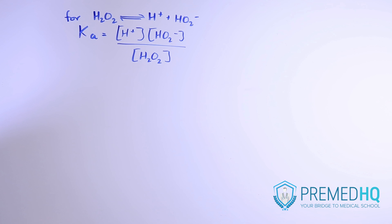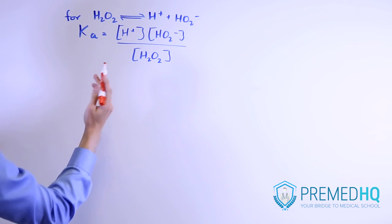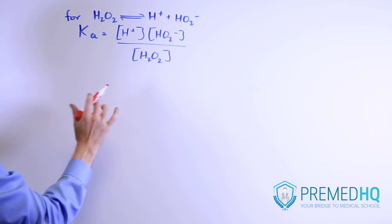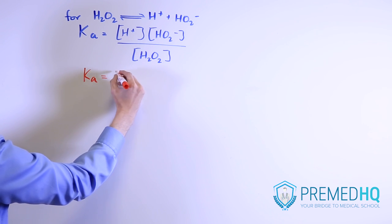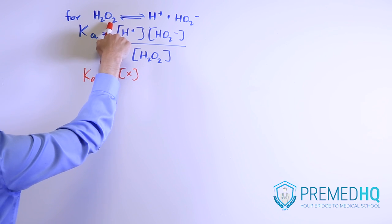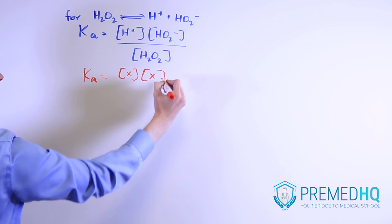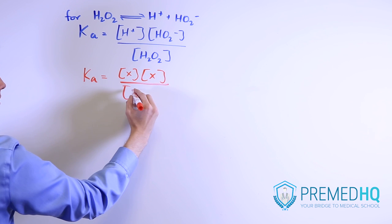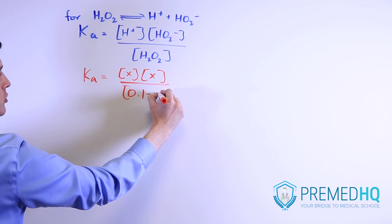For the weak acid case, the Ka is an equilibrium expression equal to the concentration of products divided by the concentration of reactants. Because X units of H₂O₂ are dissociating, the Ka equals X times X in the numerator — one X representing H⁺ and the other representing HO₂⁻ — divided by the initial concentration of 0.1 molar minus X.